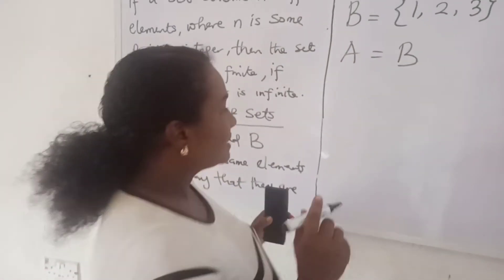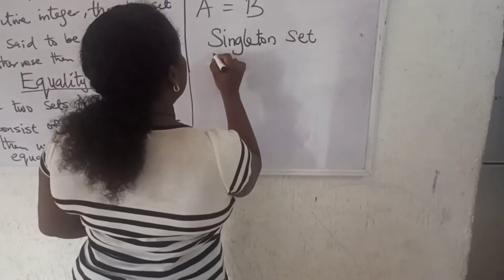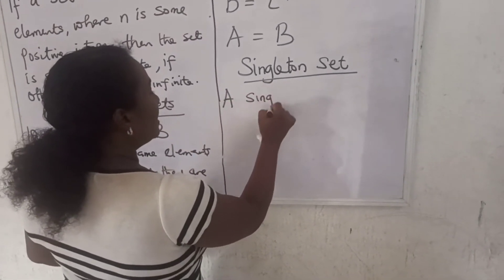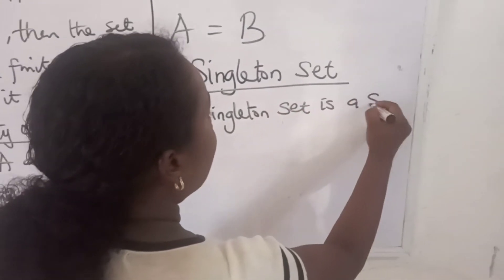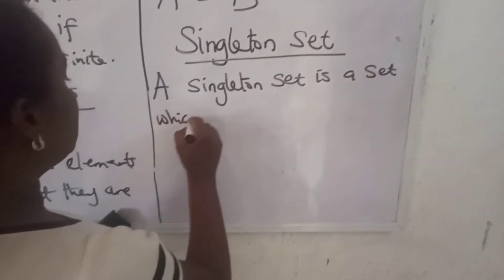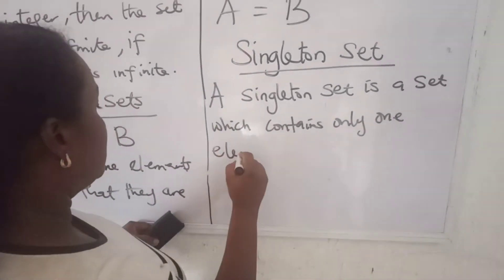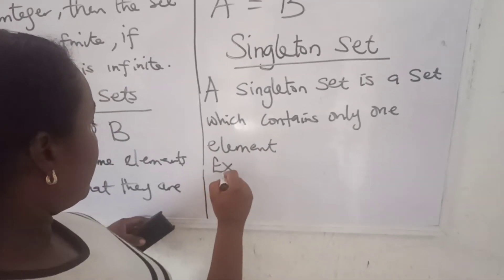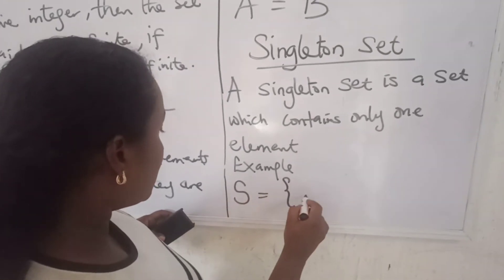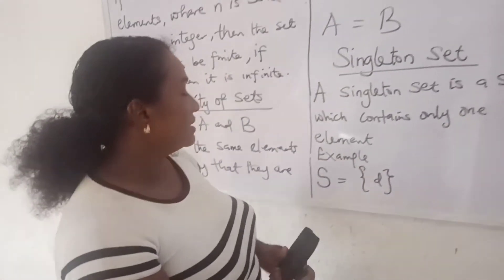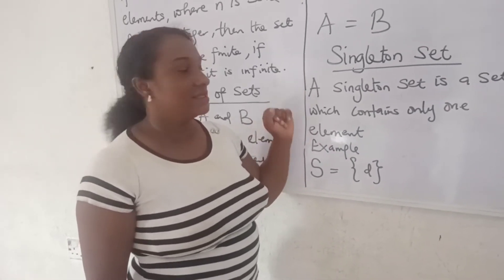Now let's look at what we call the singleton set. A singleton set is a set which contains only one element. For example, if set S has just one element in it, we say that it is a singleton set.